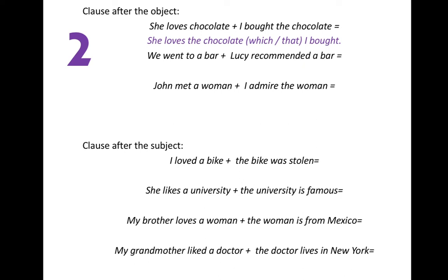When we connect those two clauses: 'She loves the chocolate which — or that — I bought.' The relative pronoun is 'which' or 'that,' and the relative clause is 'which I bought.' What's special here? 'I bought the chocolate' — we use the relative pronoun to replace 'the chocolate,' but 'the chocolate' is the object of the verb 'bought.' That means we can remove the relative pronoun: 'She loves the chocolate I bought.'